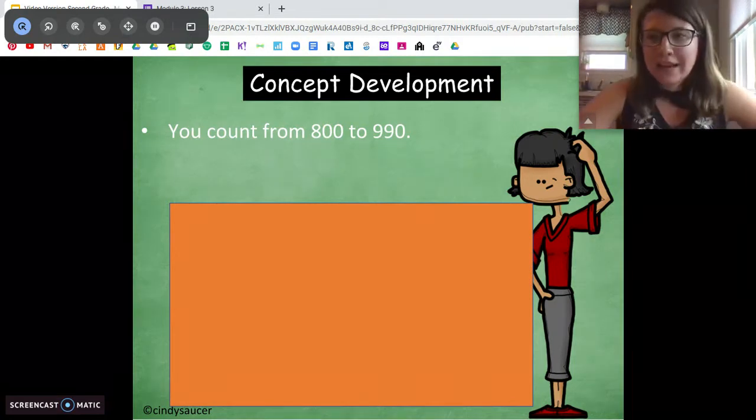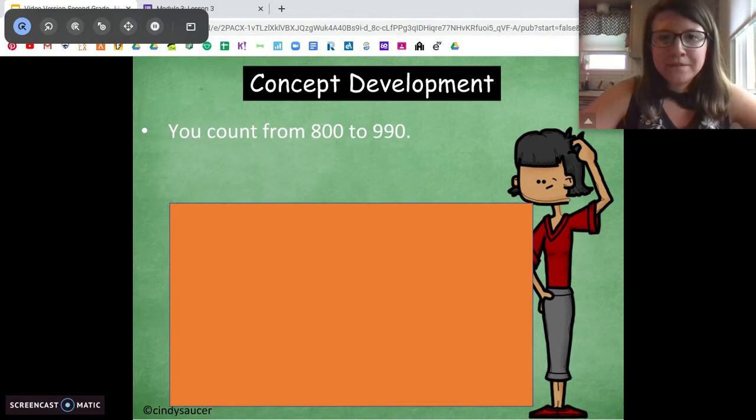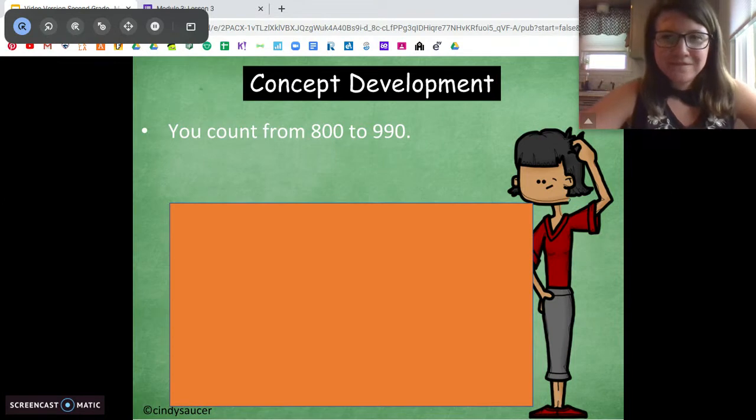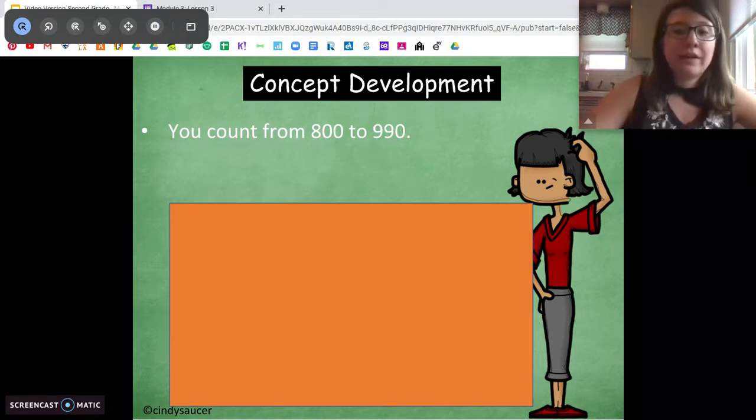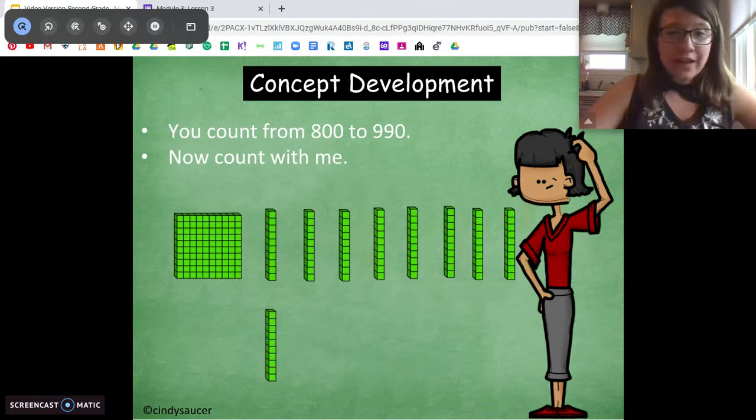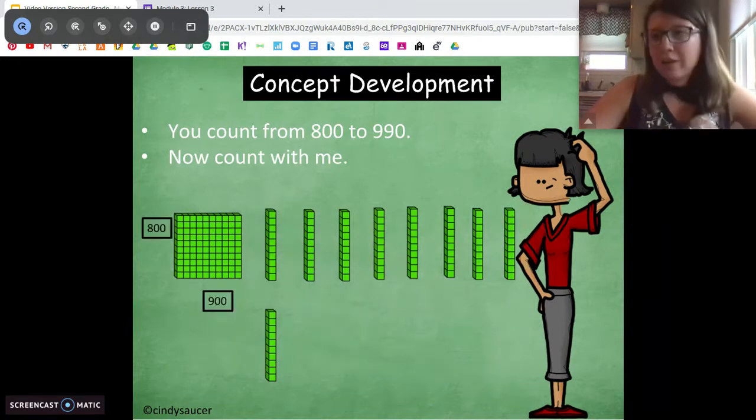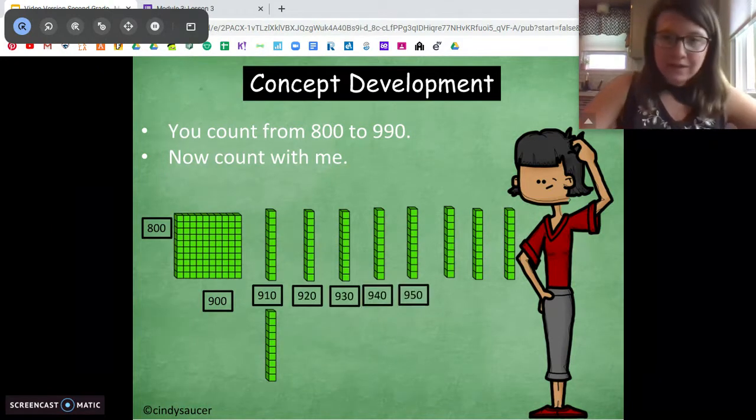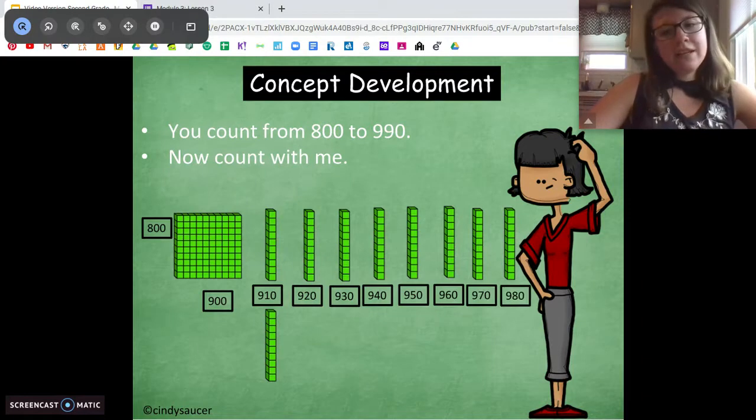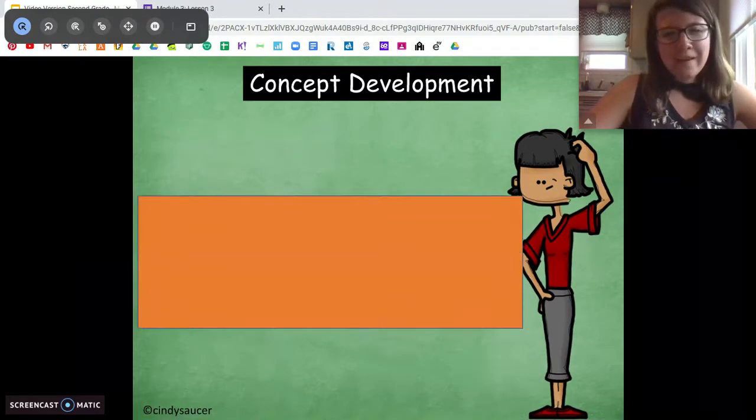All right. Count from 800 to 990. Do it on your own. Go ahead. Ready? Okay. Same thing with this one. We're starting with a base of 800, a base 10. So we can start counting right with hundreds. So we're at 800. We're going to add on the 100, 900. And then we've got to add on our tens. 910, 920, 930, 940, 950, 960, 970, 980, 990.